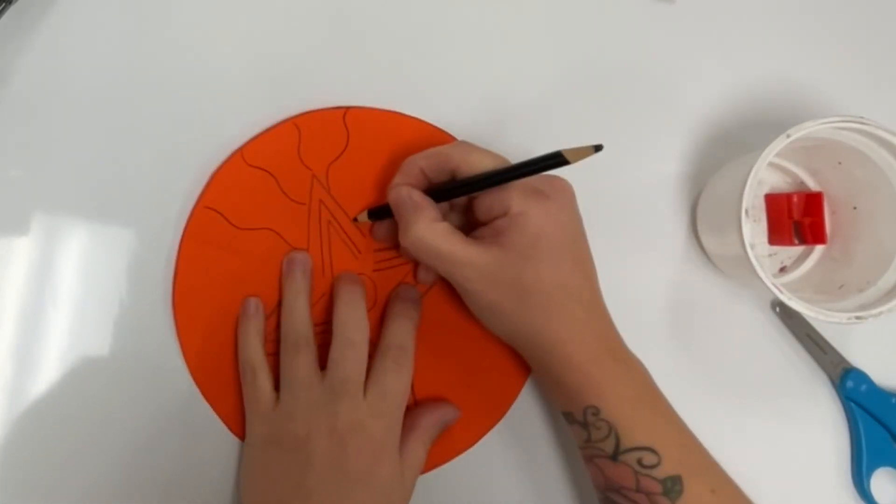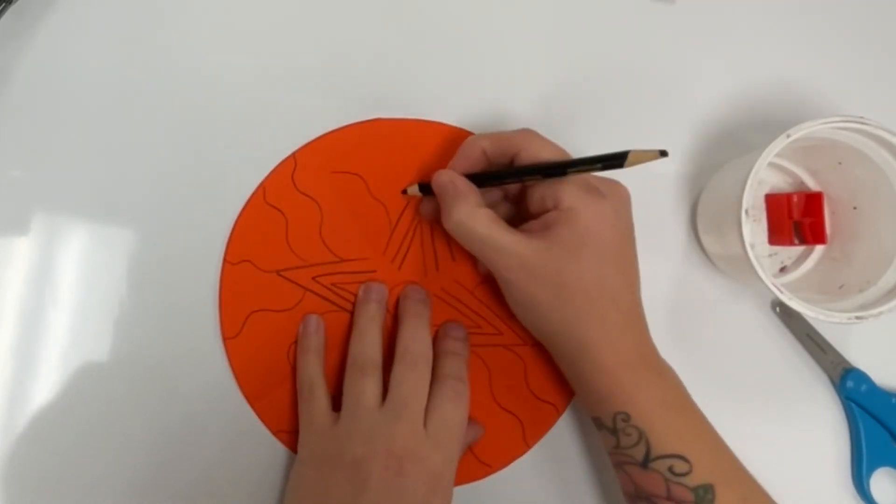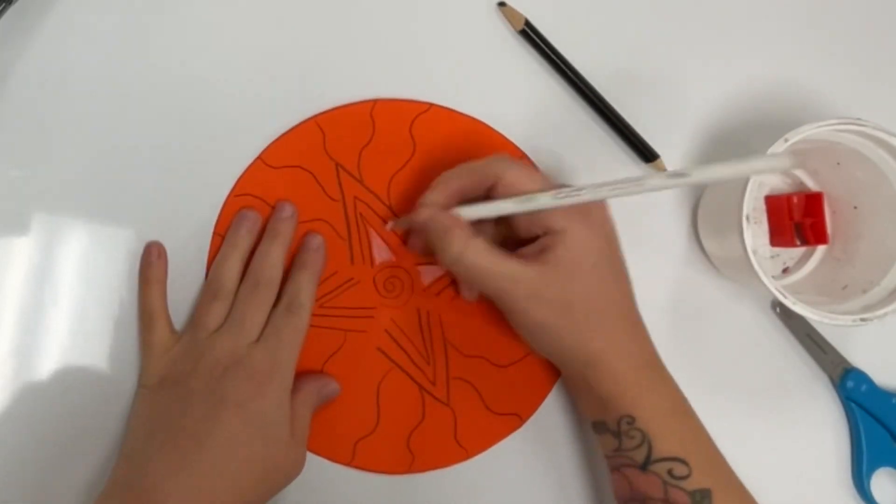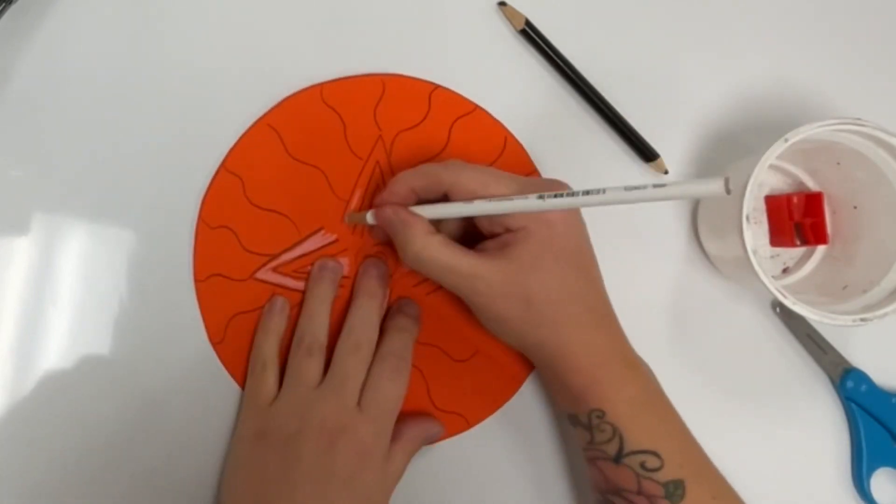So remember, show radial symmetry with your design. The design should all be the same in each section. And that will make it symmetrical all the way around.